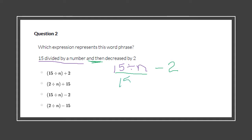I want to make sure that '15 divided by a number' is done first, so I need to put parentheses around it. That ensures it is calculated first. So I'm going to choose that option: (15 ÷ n) − 2.